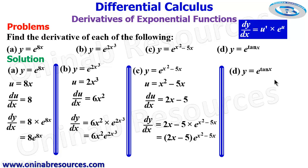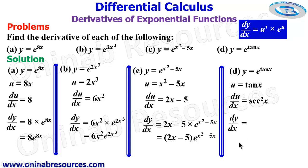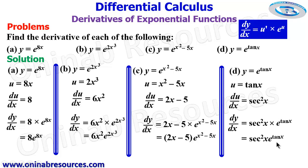We then go to problem d: y equals e raised to power tan x. Our u will be tan x. We find du/dx, which is equal to sec²x. We then substitute to get dy/dx, which is sec²x multiplied by e raised to power u, that is e raised to power tan x. Simplifying, dy/dx equals sec²x times e raised to power tan x. That's the end of the solution to problem d.